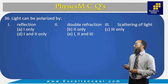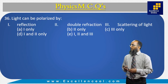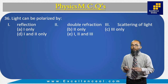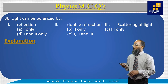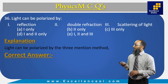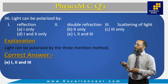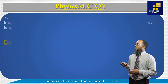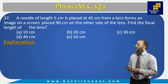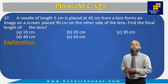Light can be polarized by — reflection, double refraction, and scattering of light are all valid methods of polarization. All three methods are applicable, so the correct answer is E: all of the above — options 1, 2, and 3.